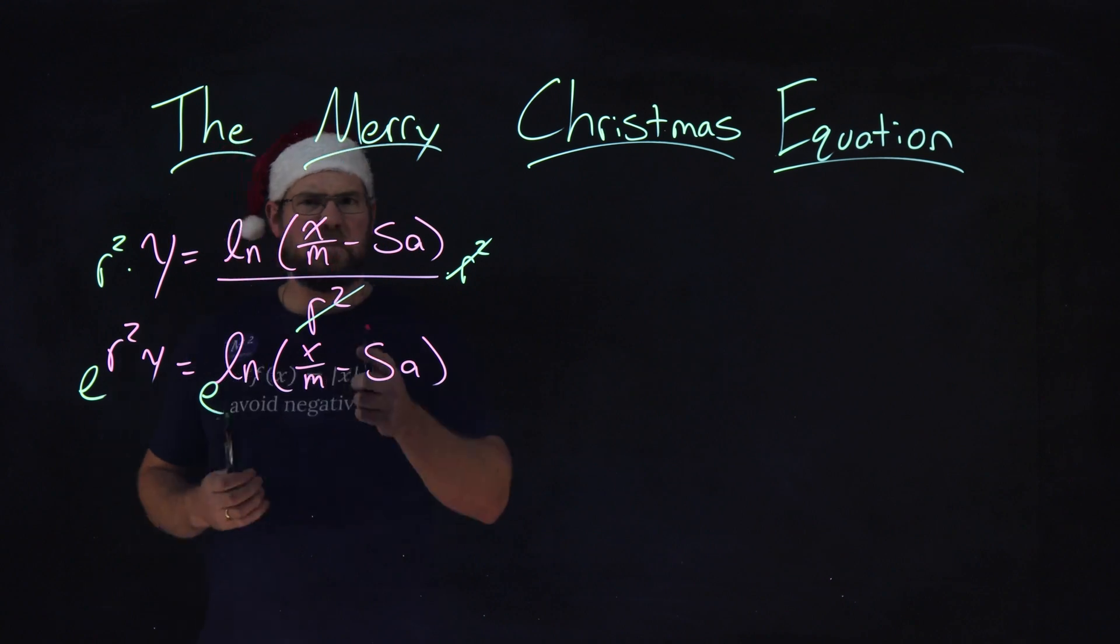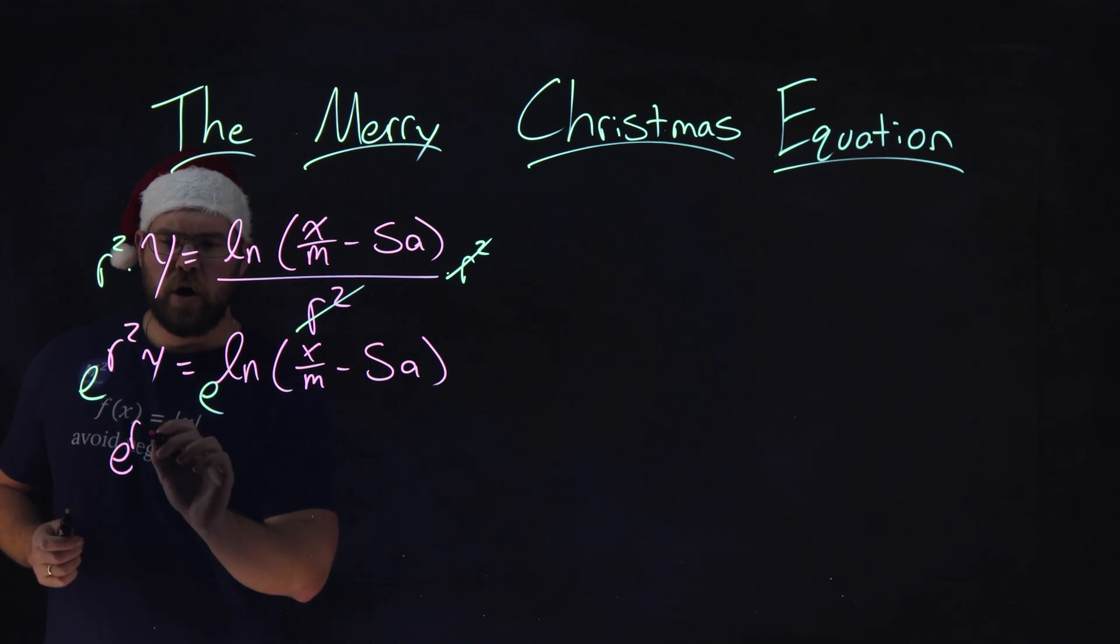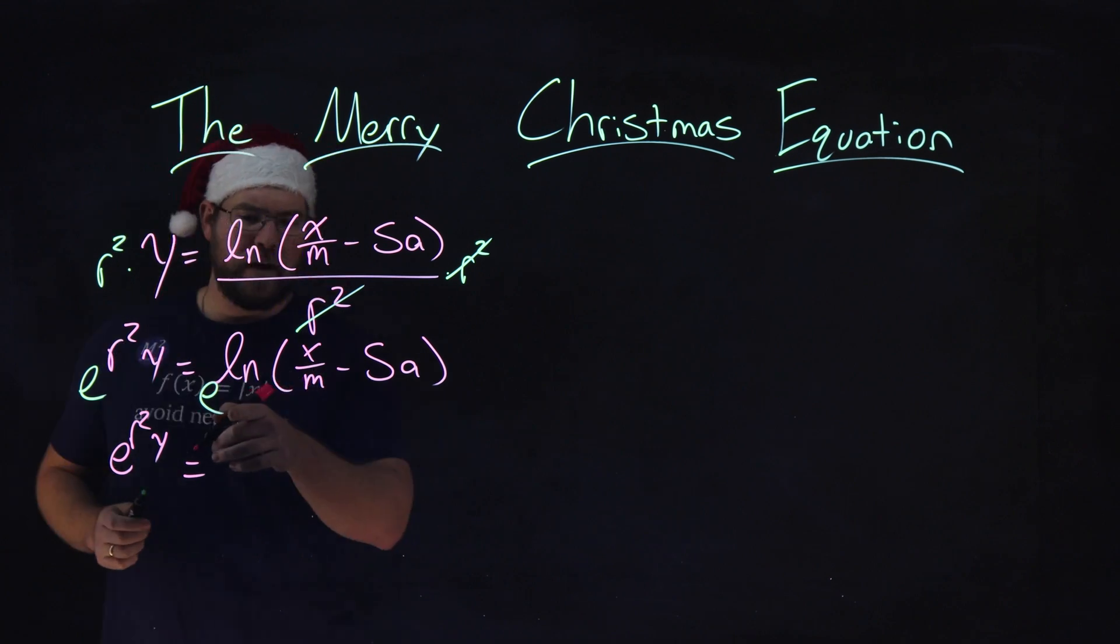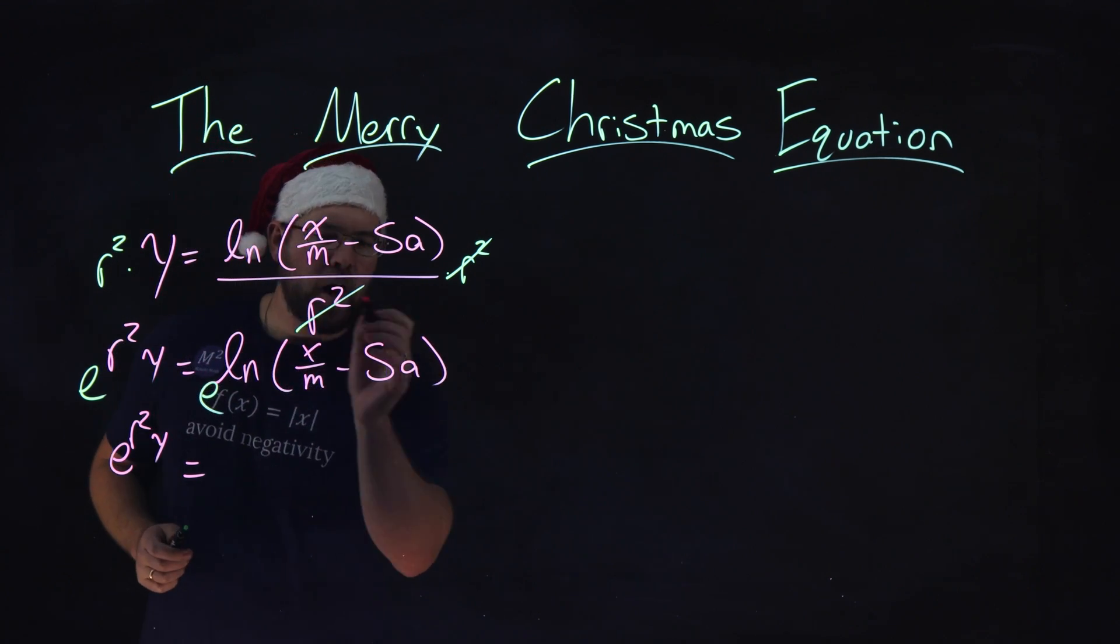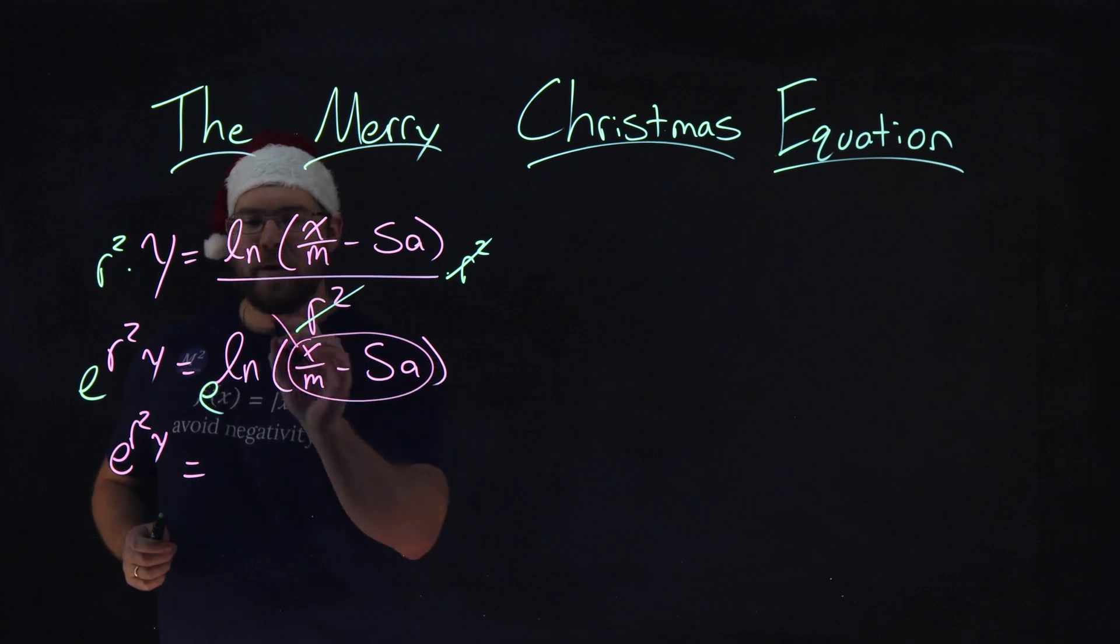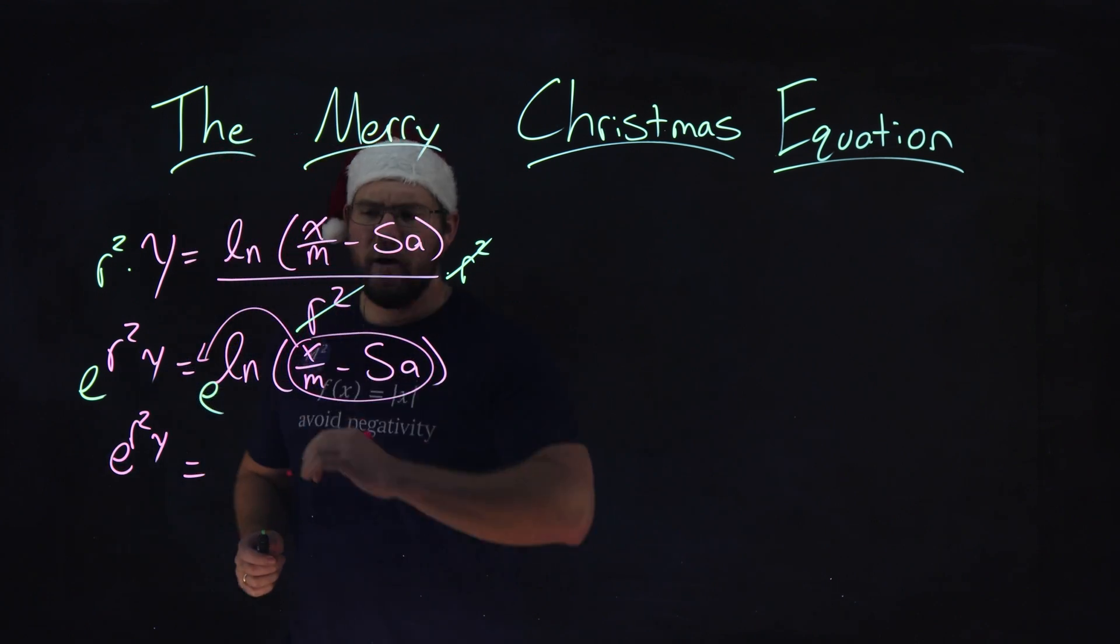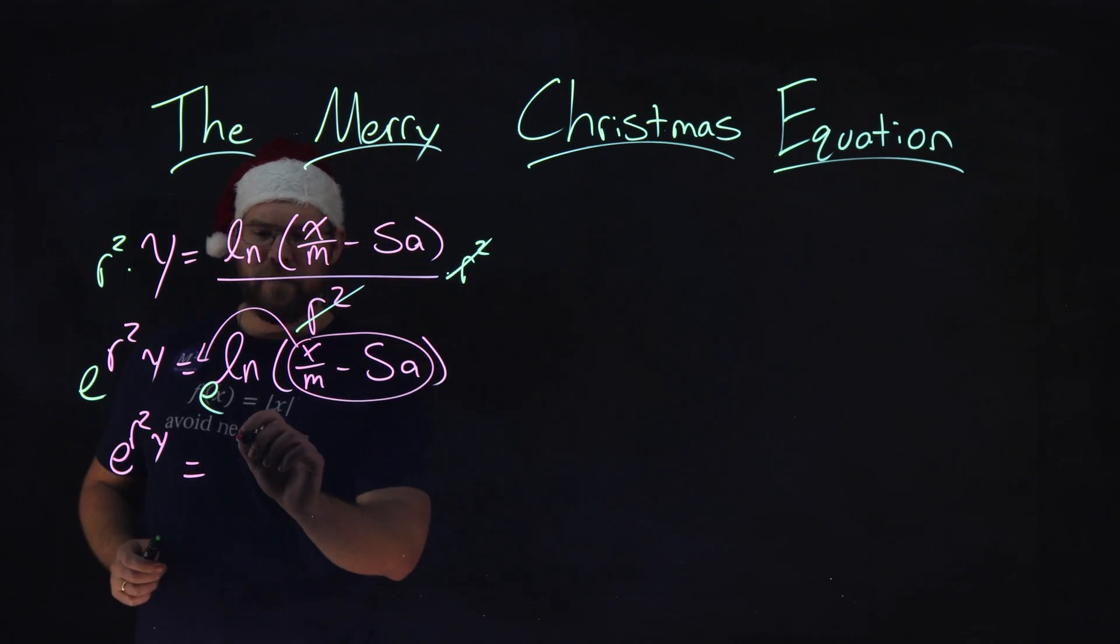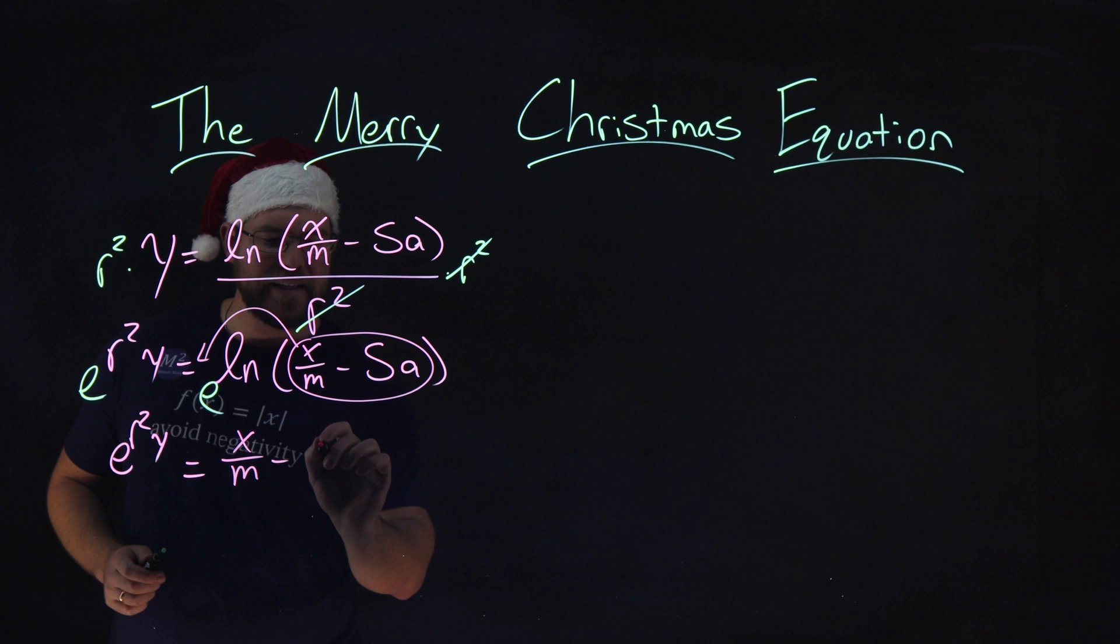So, left-hand side's pretty simple. It's still that e r squared y, but the right-hand side, again, we have e to the natural log power. Our rules state that this whole inside can come out front of the equation, and we get rid of the e in the natural log. So, we have x over m minus an sa.